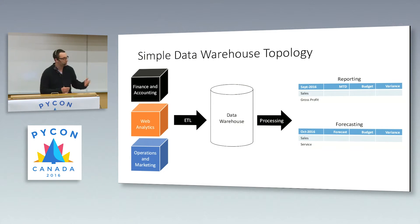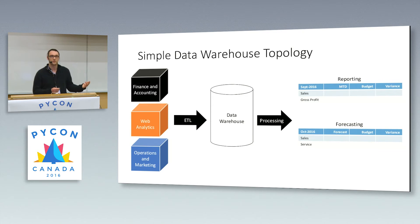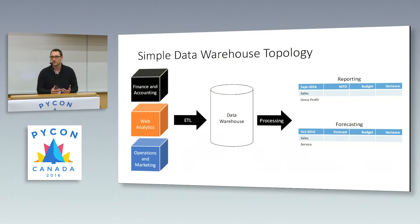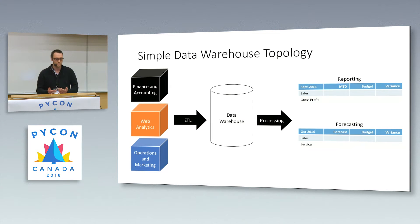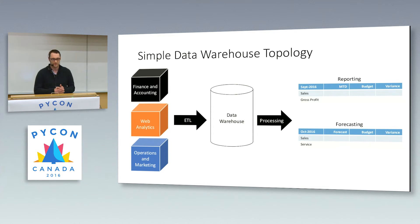The ETL process stands for extract, transform, and load. That's usually pulling data out of those source systems, doing any transformation you have to, and then loading it into your data warehouse. The processing is mostly SQL scripts that prepare the reports or forecasts that you want to use.